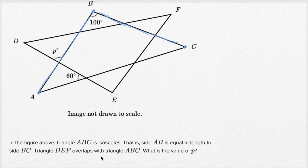Triangle DEF overlaps with triangle ABC. We see that it kind of formed this star of David, or this skewed star of David. What is the value of angle P here? All right, let's work through this.